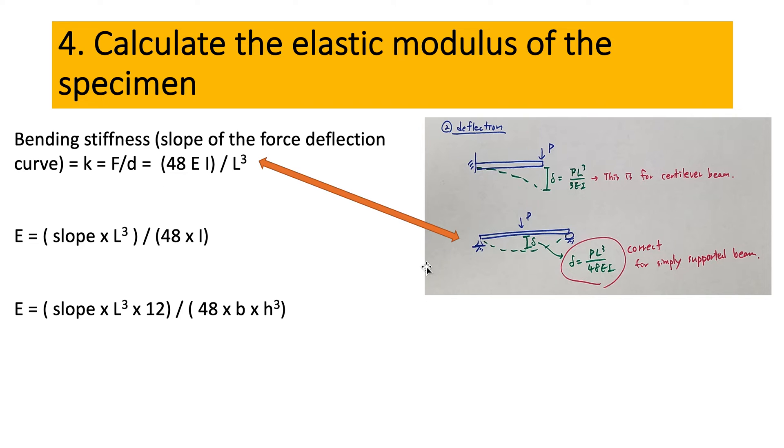It's the slope of force deflection and that's k. We know from three-point bending analysis that deflection is given in this formula. So P is F, it's the force. So F or P times L cubed divided by 48. E is the elastic modulus and I is the moment of inertia. This is deflection.